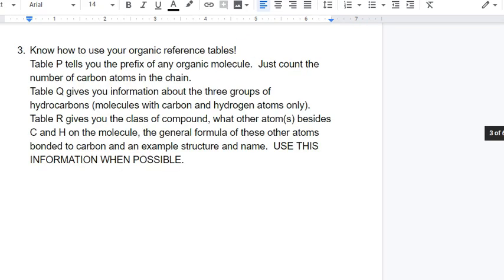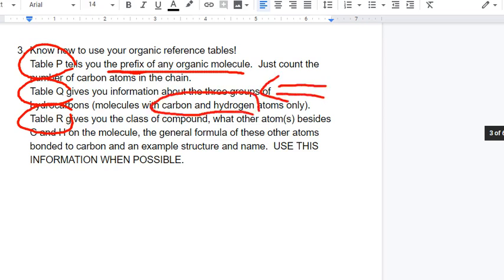When it comes to organic chemistry, you must look and have open the three reference tables to be successful. That's table P, table Q, and table R. P gives you prefixes, which means you count the number of carbon atoms in the chain, and the prefix tells you how many carbon atoms.